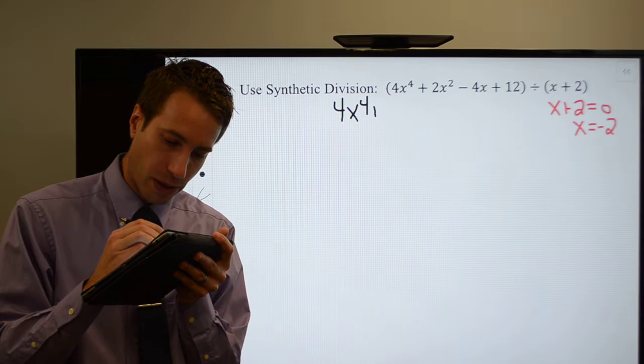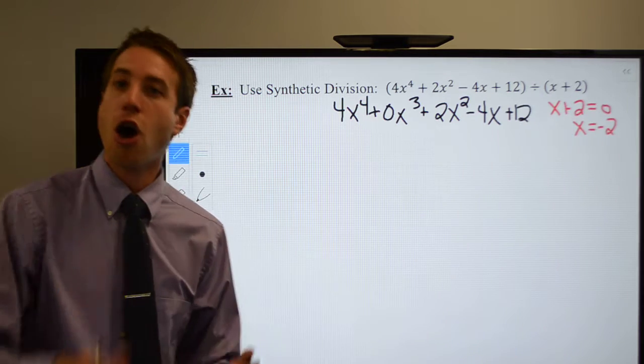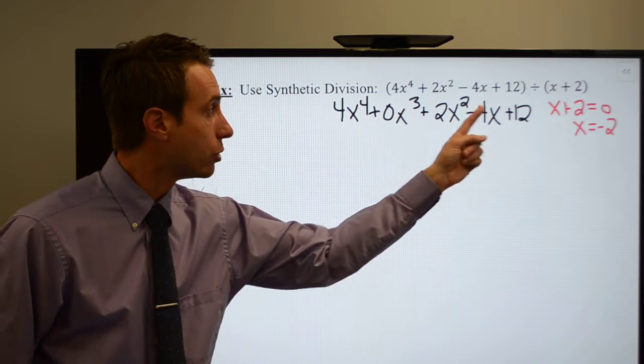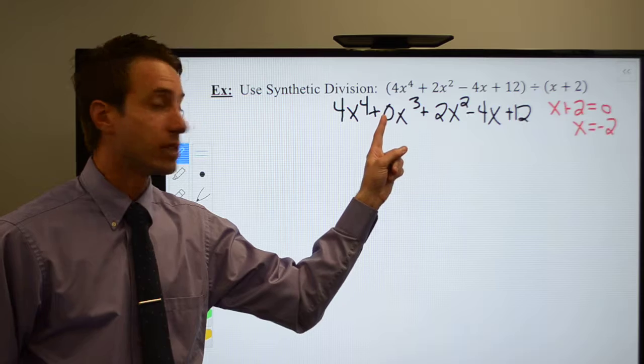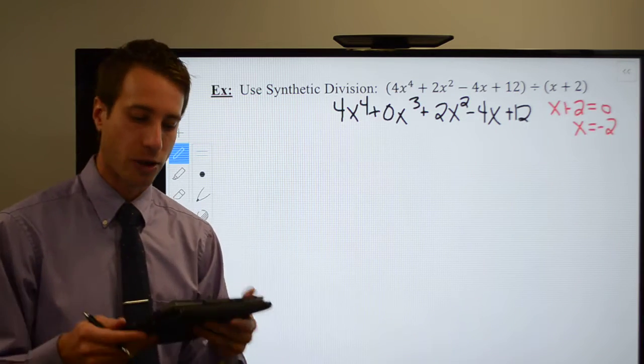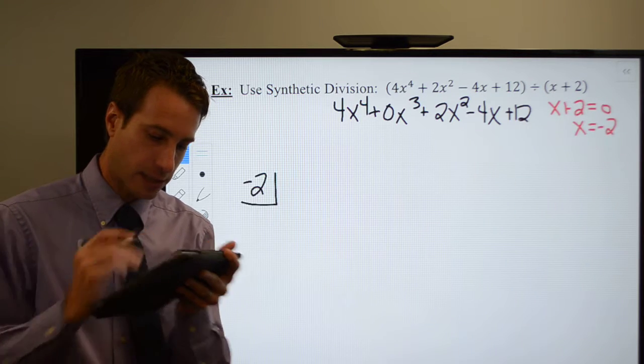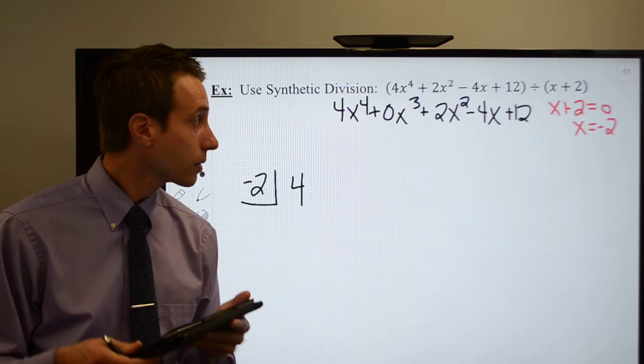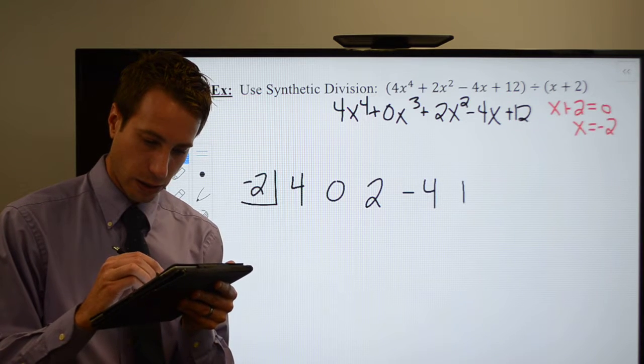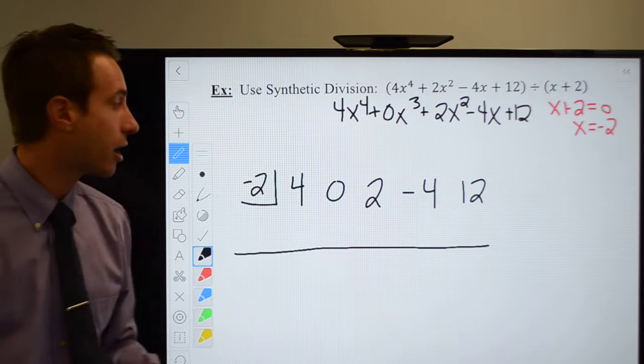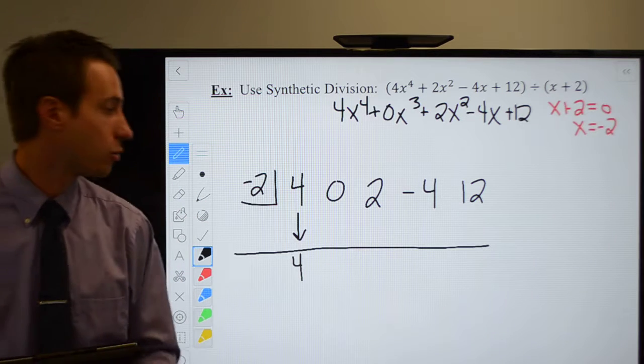So 4x to the fourth plus 0x cubed plus 2x squared minus 4x plus 12. Now that I've added my placeholder, 4, 3, 2, 1, 0, I've accounted for every power of x starting with the highest power I was given, using 0 as the leading coefficient for my placeholder. Now I'm all set to set up my synthetic division using a negative 2. So negative 2 goes inside the box and I pull out all my leading coefficients: 4, 0, 2, negative 4, 12. The bar to separate my work from my answer. The first step is to bring down that leading coefficient, which is a 4.